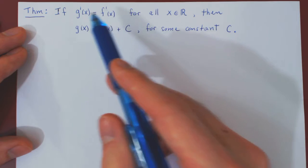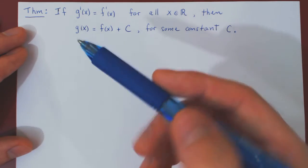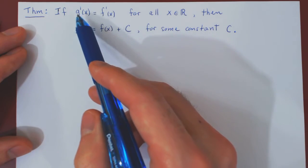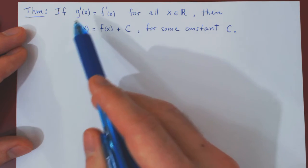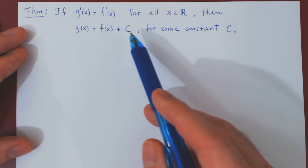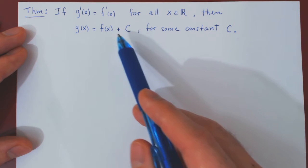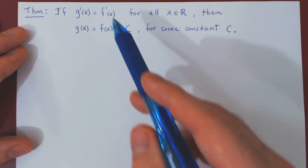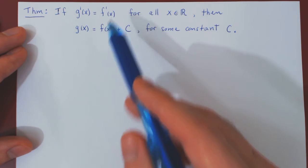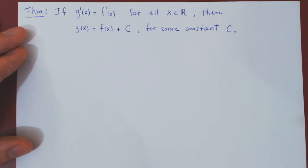So if you think of this geometrically, the result says that if g and f have the same derivative, then g must be a vertical translation of f. So up to a vertical translation, this result says that the derivative defines completely a function.